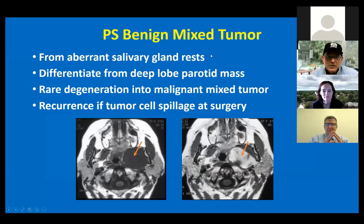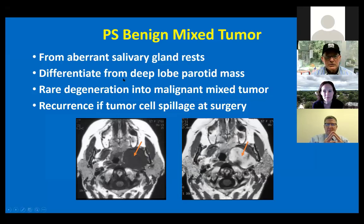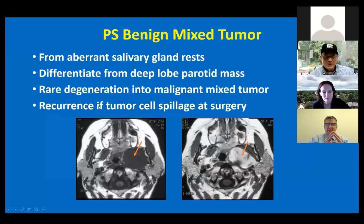The second case: a 57-year-old female with left oropharyngeal swelling. A T1-weighted MRI scan shows a mass in the left parapharyngeal space that shows enhancement. The space is the parapharyngeal space, and the diagnosis is a benign mixed tumor or pleomorphic adenoma. These arise from aberrant salivary gland rests in the parapharyngeal space. It's important from a surgical point of view to differentiate these from deep lobe parotid masses. They can occasionally degenerate into malignant mixed tumors, and recurrence has been seen if tumor cells are spilled at surgery.